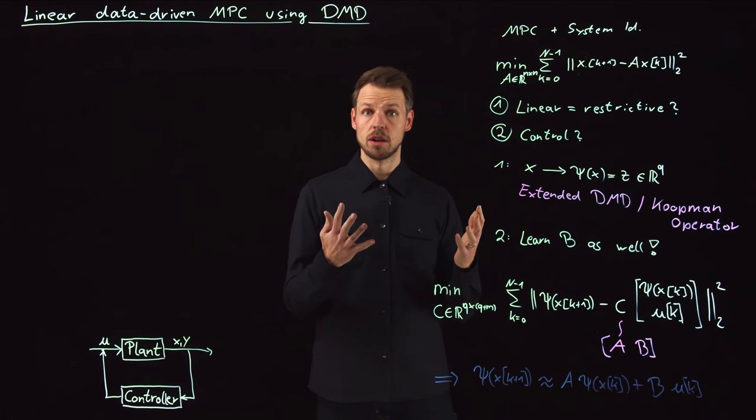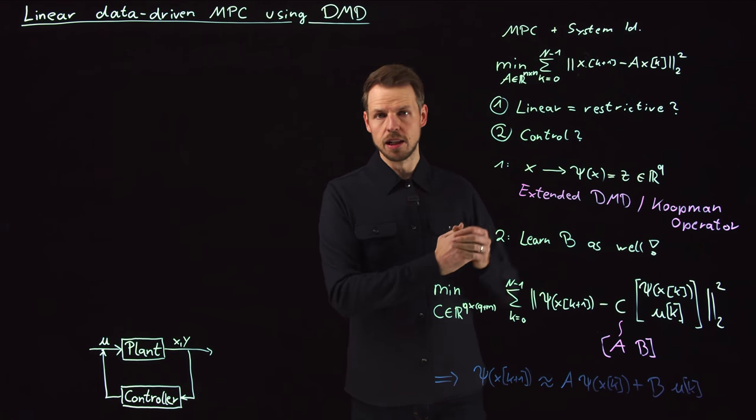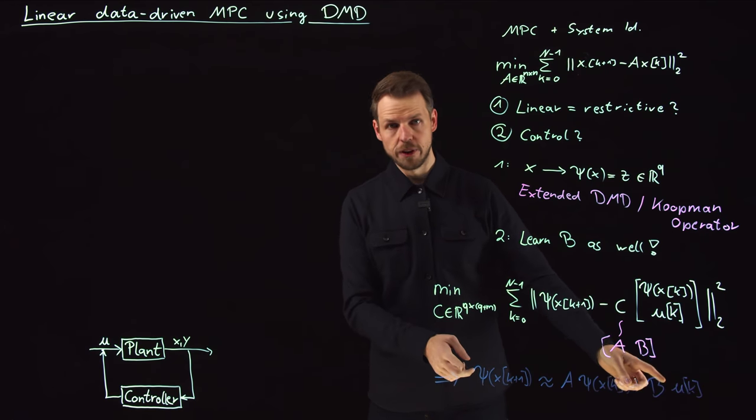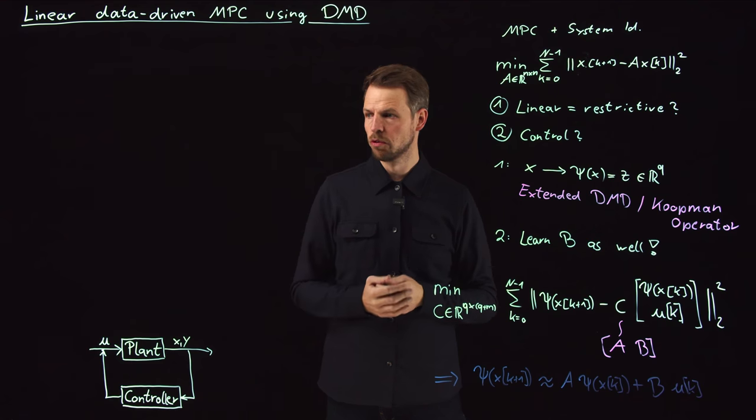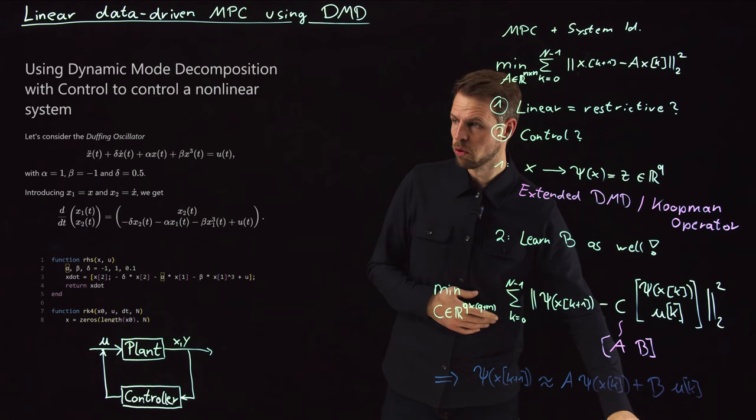So we have a nonlinear system potentially, the plant. Then we have the extended DMD algorithm, so we define a dictionary Psi. And then we identify a linear system that is not perfectly accurate, but maybe useful in combination with MPC. And this is what we're going to study with some code now.